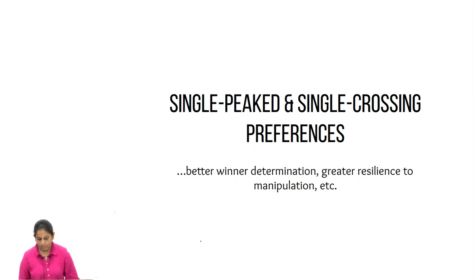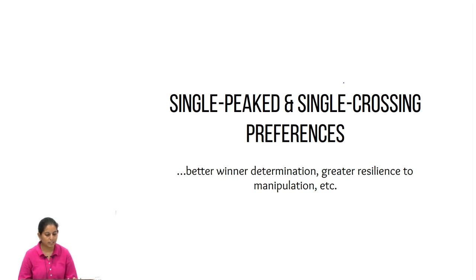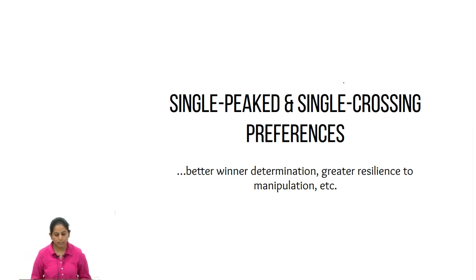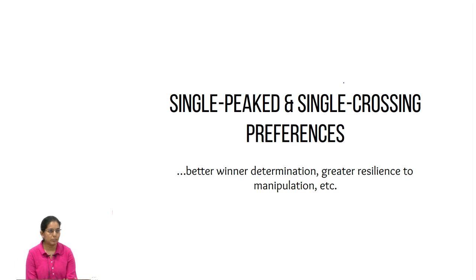Let us recall where we paused: our understanding of what is possible when designing mechanisms with certain properties. The last thing we saw was that it is not possible to come up with a mechanism which is simultaneously onto, strategy-proof, and non-dictatorial. We built our way into understanding that strategy-proofness implies monotonicity, and strategy-proofness with onto implies unanimity.